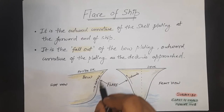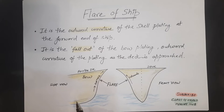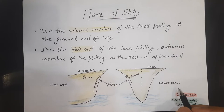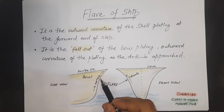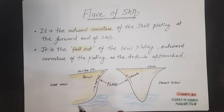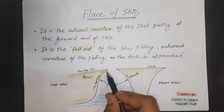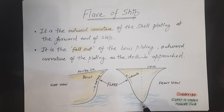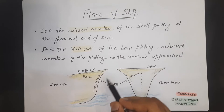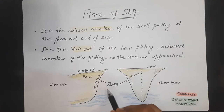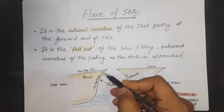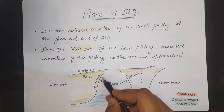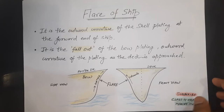You can see here the diagram of the ship forward from the side view as well as from the forward view. This is the bow part and this is the shell plating. You can see from the keel, the shell plating is rising upwards and outwards. This outward curvature from the keel to the deck side is called the flare of the ship. This is the basic definition.